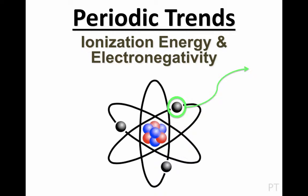Welcome back to another lesson on periodic trends. This time we focus on ionization energy and electronegativity. Those are some pretty big and intimidating chemistry words, but today I'll not only define them, but talk about how these properties can influence the way an atom behaves. We'll also see how these properties vary based on an element's position on the periodic table, so you should keep your periodic table close by.